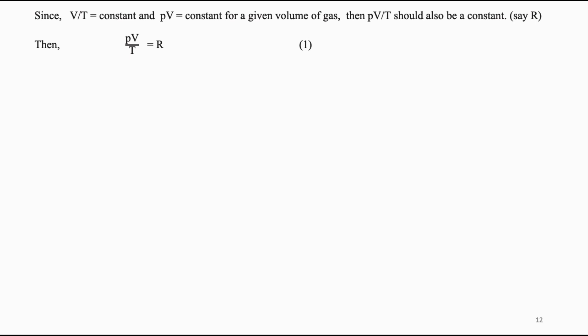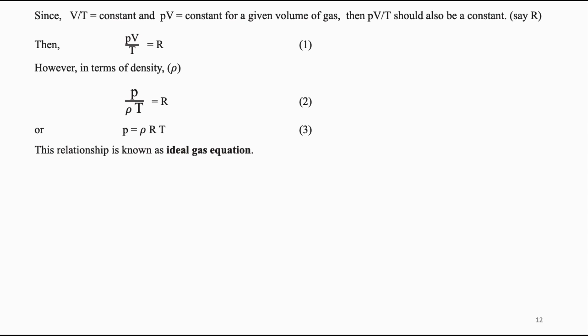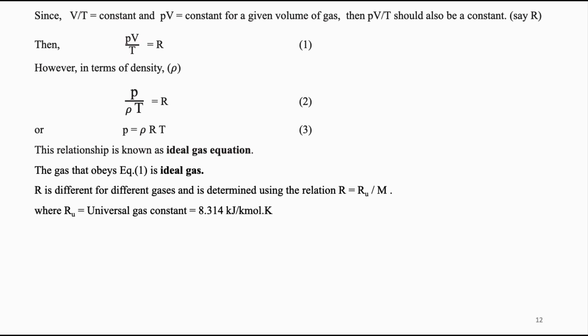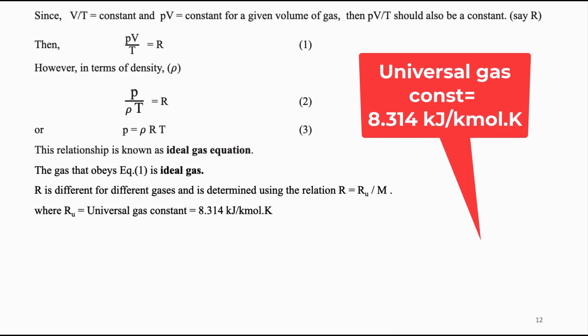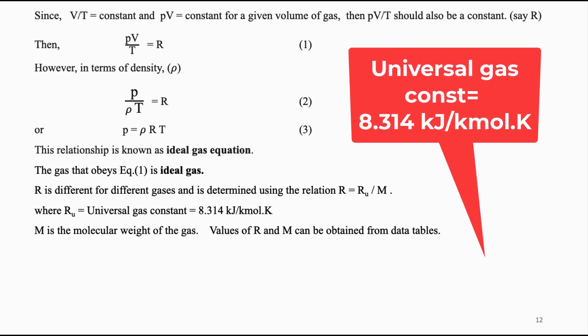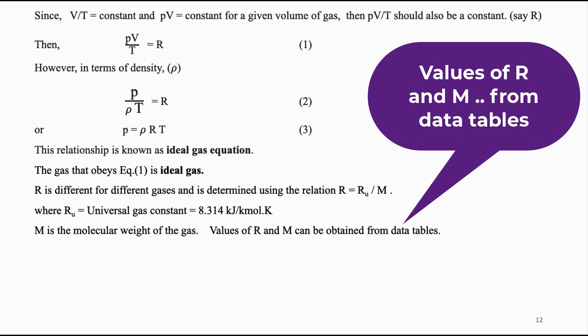Mathematically, the above can be expressed as PV/T = R. In terms of density, it is expressed as P = ρRT, where P is the pressure, ρ is the mass density of the gas, R is the gas constant, and T is the absolute temperature. This relationship is known as the ideal gas equation, and the gas that obeys it is known as an ideal gas or perfect gas. R, though called a constant, is strictly constant only for a particular gas. Its value is determined using R = Rᵤ/M, where Rᵤ is the universal gas constant (8.314 kJ/kmol·K) and M is the molecular weight of the gas.